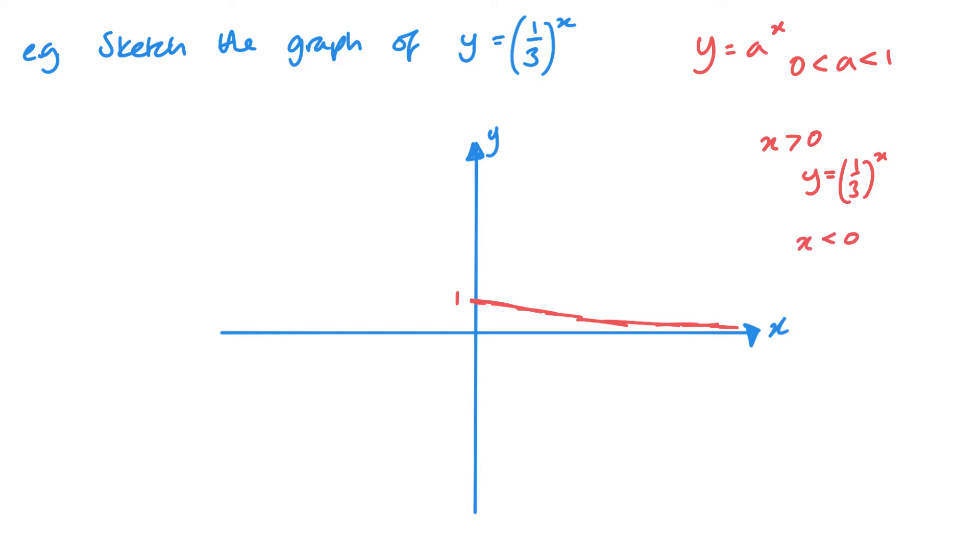When I think about what's happening as x is negative, well, 1/3 to the minus 1 is going to be 3, y equals 1/3 to the minus 2 is going to be 9, and so on. These numbers are jumping up bigger and bigger, and we actually get a reflection.